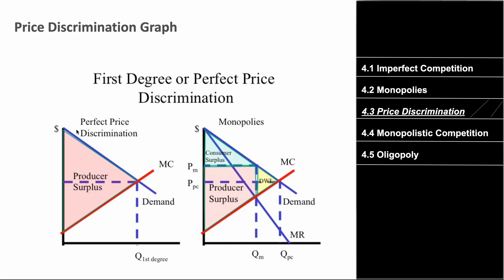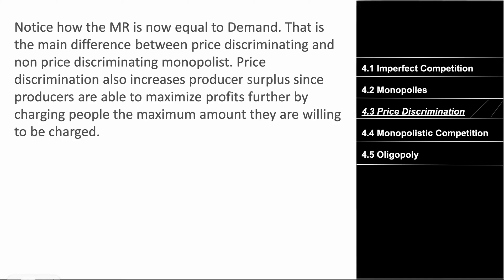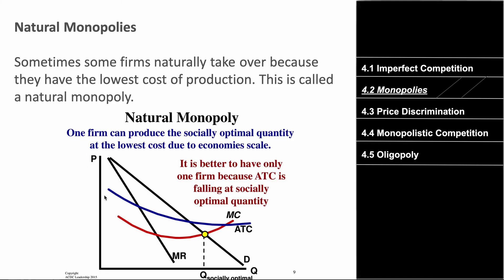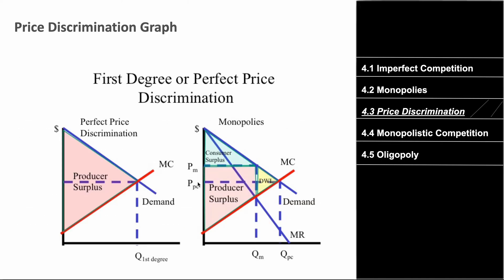With price discrimination, a firm can charge everyone the maximum amount they're willing to pay. For example, if a movie ticket costs ten dollars but a child can only pay eight dollars, price discrimination allows the eight-dollar option so the child can attend, enhancing producer surplus. Price discrimination maximizes producer surplus and eliminates consumer surplus. On a graph, marginal revenue equals the demand curve when everyone is charged their maximum willingness to pay.